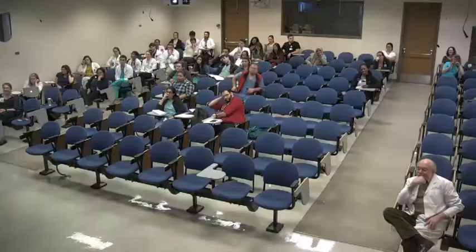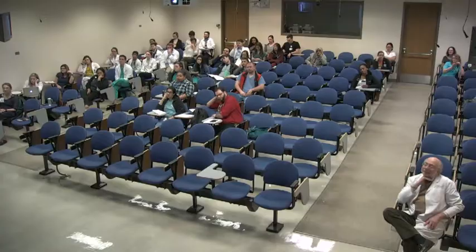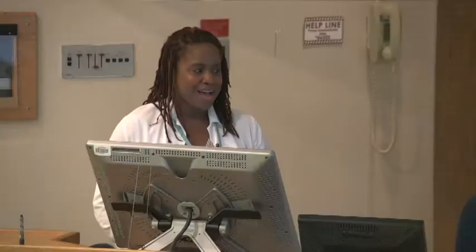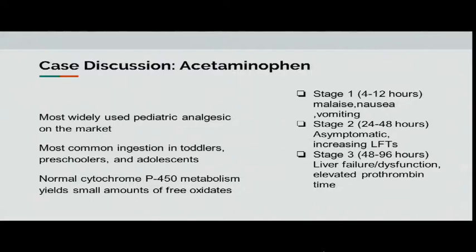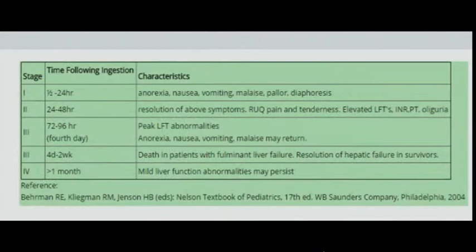Yes, you transfer. Acetaminophen is the most commonly used pediatric analgesic on the market and the most common ingestion in toddlers and preschoolers. Normal cytochrome P450 metabolism yields free oxidants. Toxicity happens in multiple stages: Stage 1 at 4 to 12 hours — nausea and vomiting; Stage 2 at 24 to 48 hours — asymptomatic rise in liver function tests; Stage 3 — liver dysfunction with elevated prothrombin time; Stage 4 at 7 to 8 days — potential resolution of liver injury. Death can occur 4 days to 2 weeks later in fulminant liver failure. Mild liver function abnormalities may persist greater than one month.